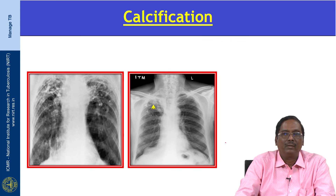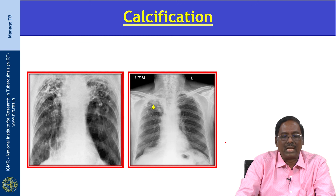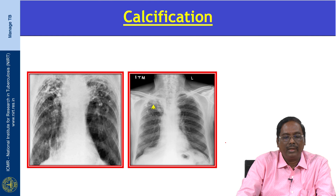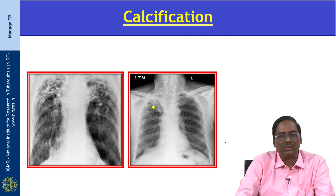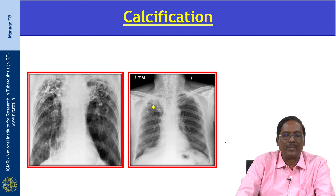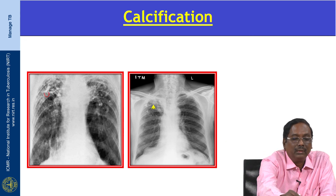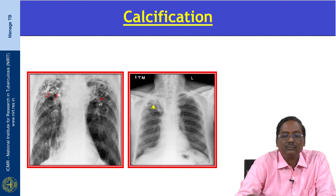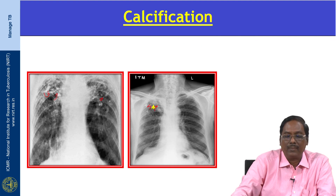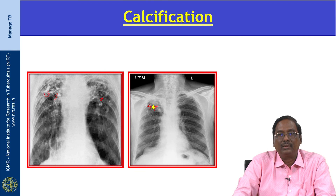These are various parenchymal calcifications — dystrophic calcification occurring in the damaged lung following TB infection. It is a local organized process with local deposition of crystalline hydroxyapatite calcium salt. Here we can see multiple parenchymal calcifications.